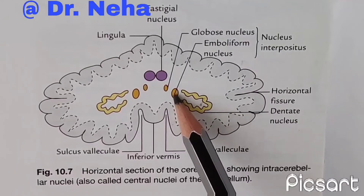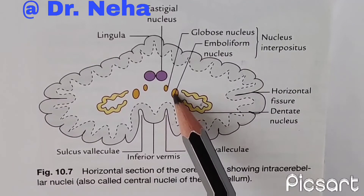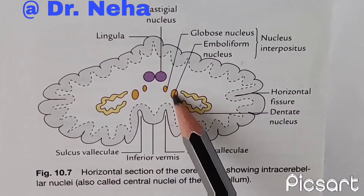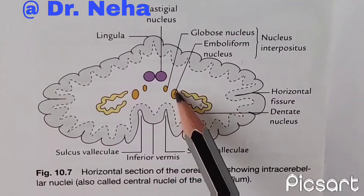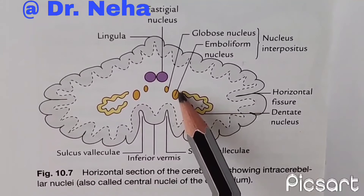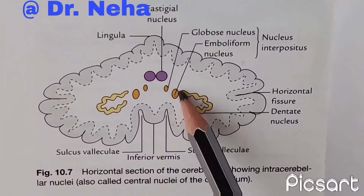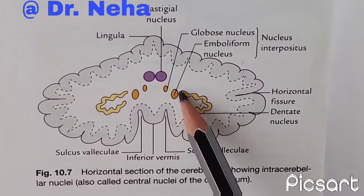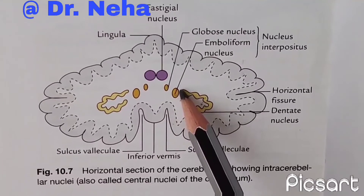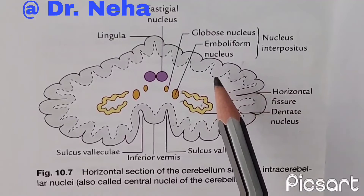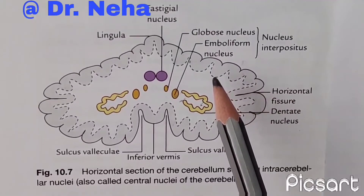Medial to the dentate nucleus is the emboliform nucleus, which is oval in shape, situated medial to the dentate nucleus and partially covering its hilum. It is the nucleus of the paleocerebellum; hence it receives afferent fibers from it and gives fibers to the red nucleus via the superior cerebellar peduncle. The red nucleus projects to the spinal cord through the rubrospinal tract, which facilitates flexor muscle tone.